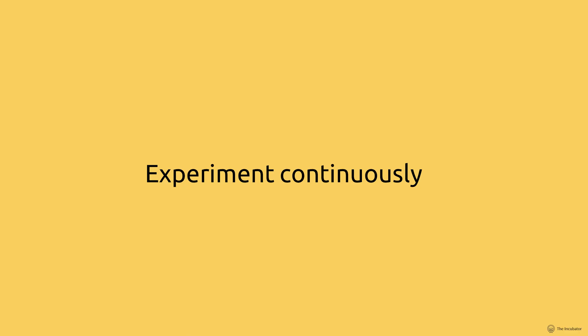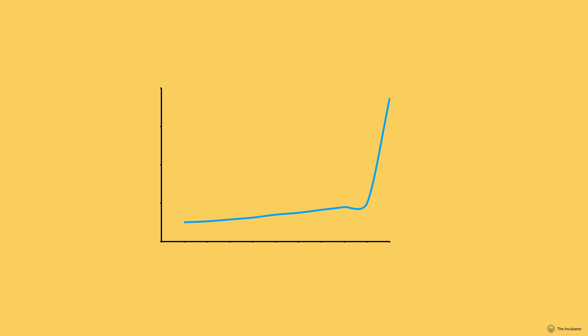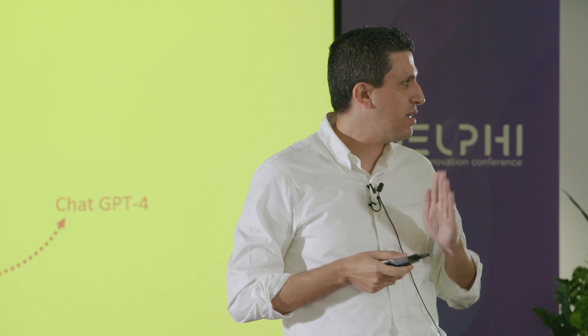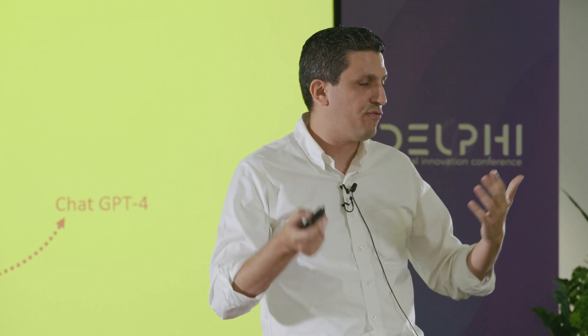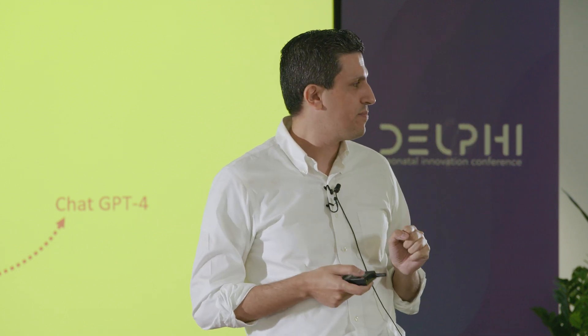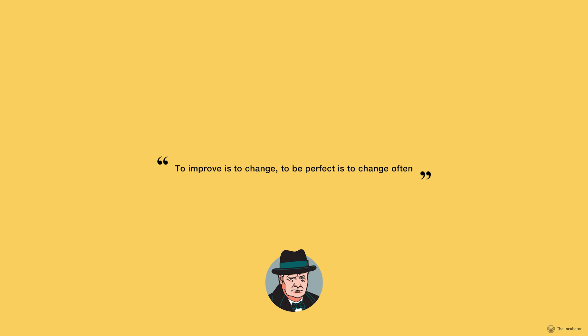What's even more interesting is that we don't really know how to use it yet. Companies trying to get ahead are asking employees to experiment and report the most meaningful uses. We've had assistants before — Cortana, Alexa, Siri — but ChatGPT is not the end-all be-all. It is only the inflection point. What's coming next is the implementation of ChatGPT services and AI tools in all sorts of software and devices we use every day. ChatGPT was released in November and we are only in March. As Winston Churchill said, to improve is to change, and to be perfect is to change often. Thank you.